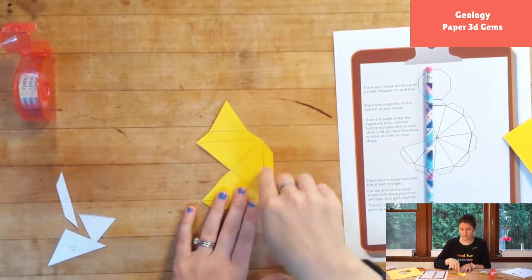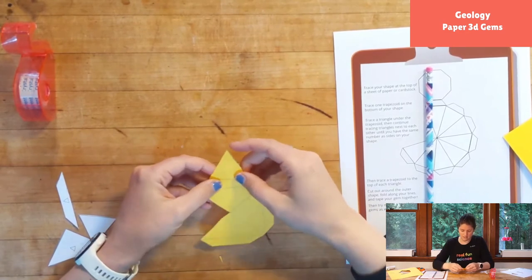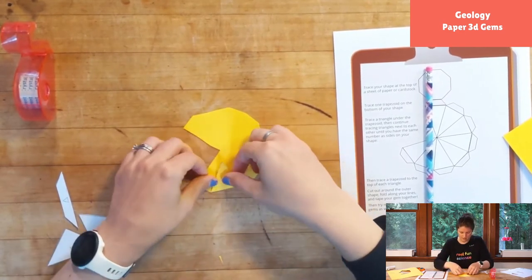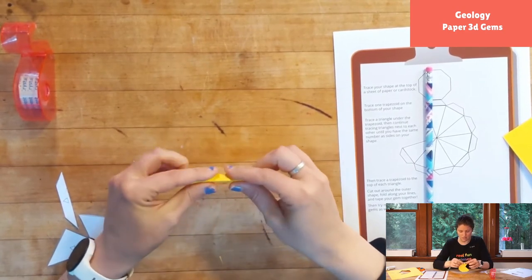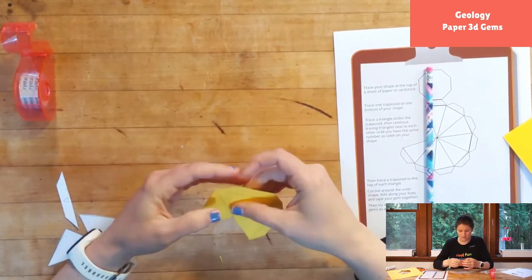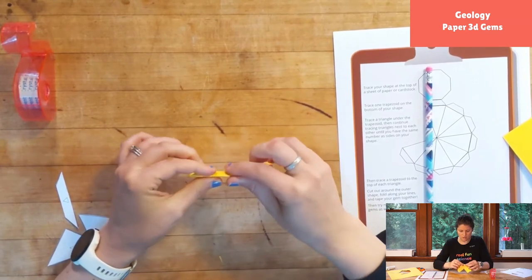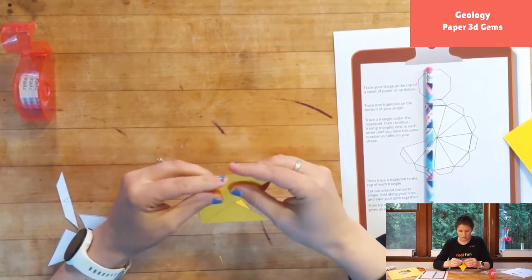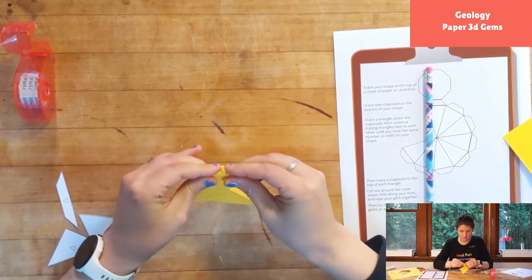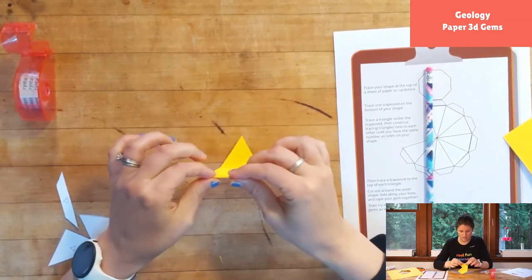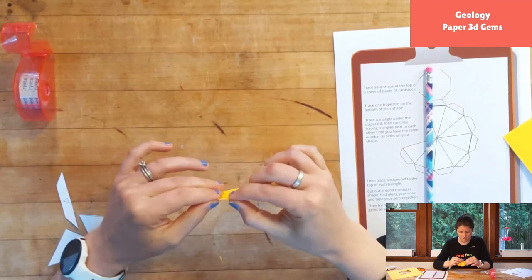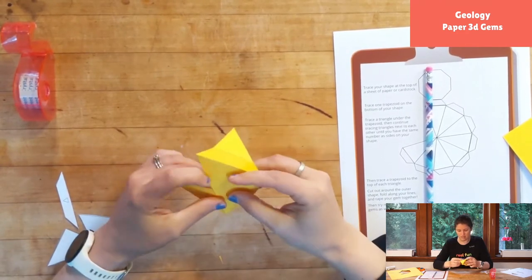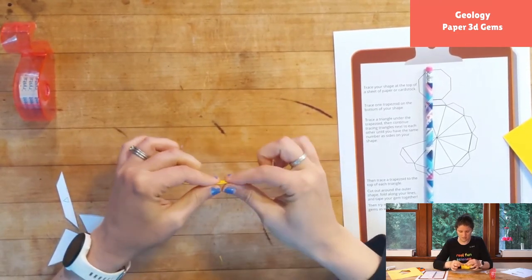I'm going to fold it on all of these lines. So you can choose if you want to fold out or in. It might be easier to fold out at first and then if you'd like to you could fold it in afterwards. Just fold all of these as best as we can. If you want to get really precise, you can use a ruler to trace around things.